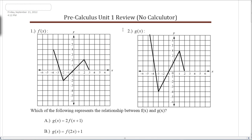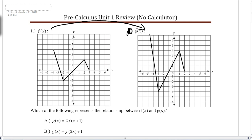Number 1. Number 1 is not part of number 2, so we want to scribble out number 2. Number 1 is actually tied to both of these problems. It says: which of the following represents the relationship between f of x and g of x? So I'm relating f of x to g of x.